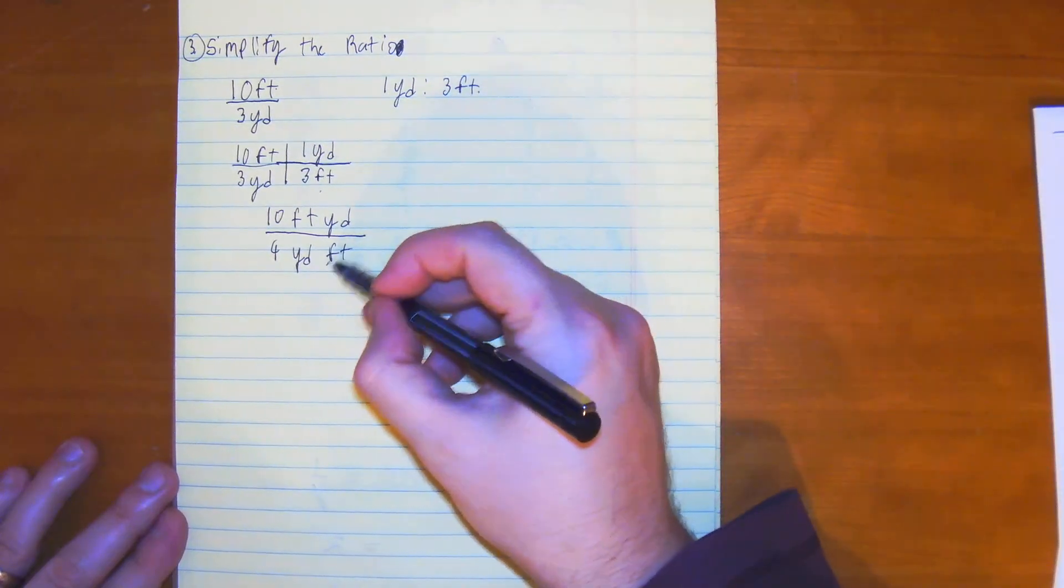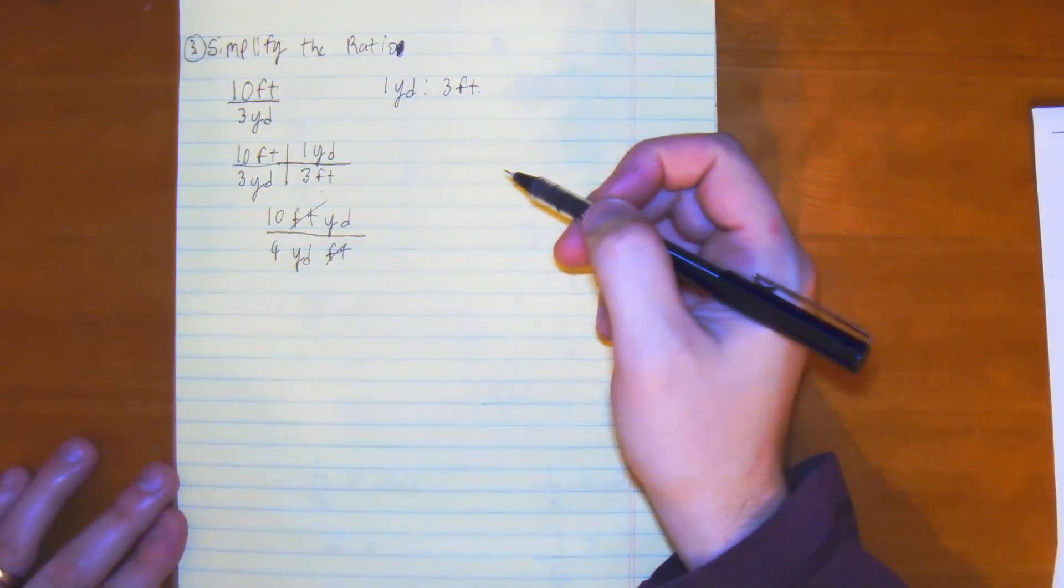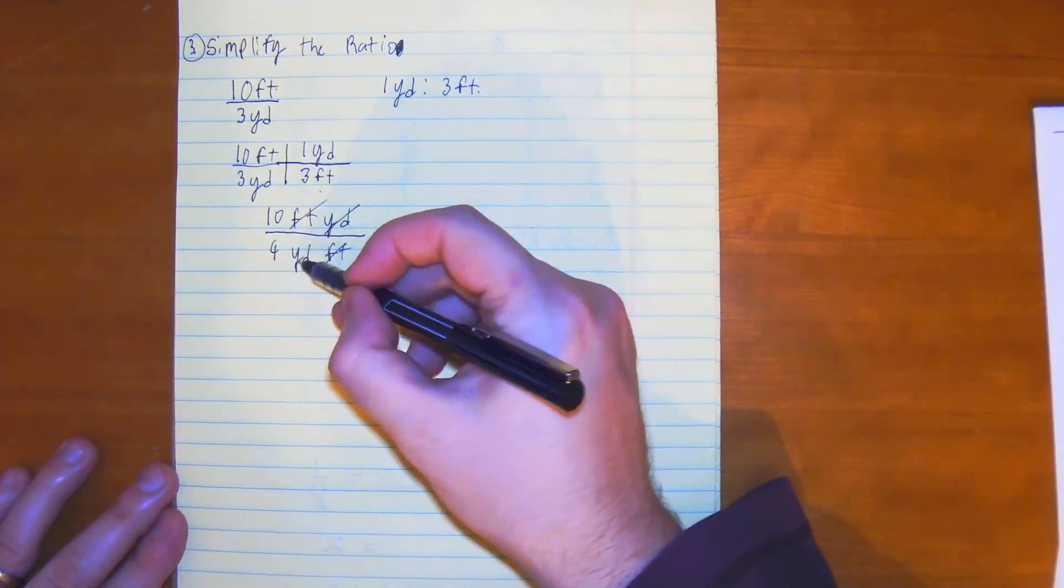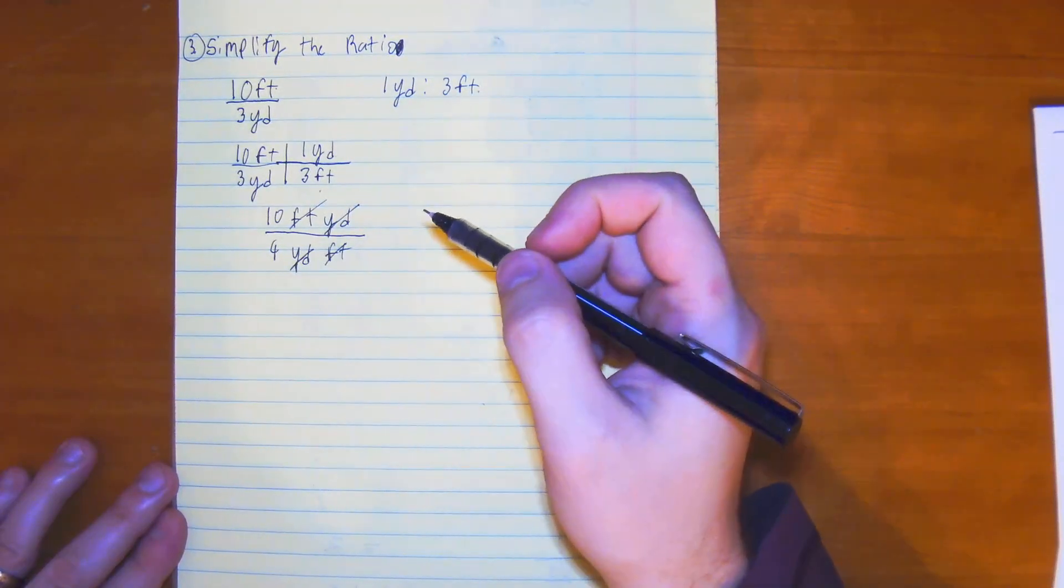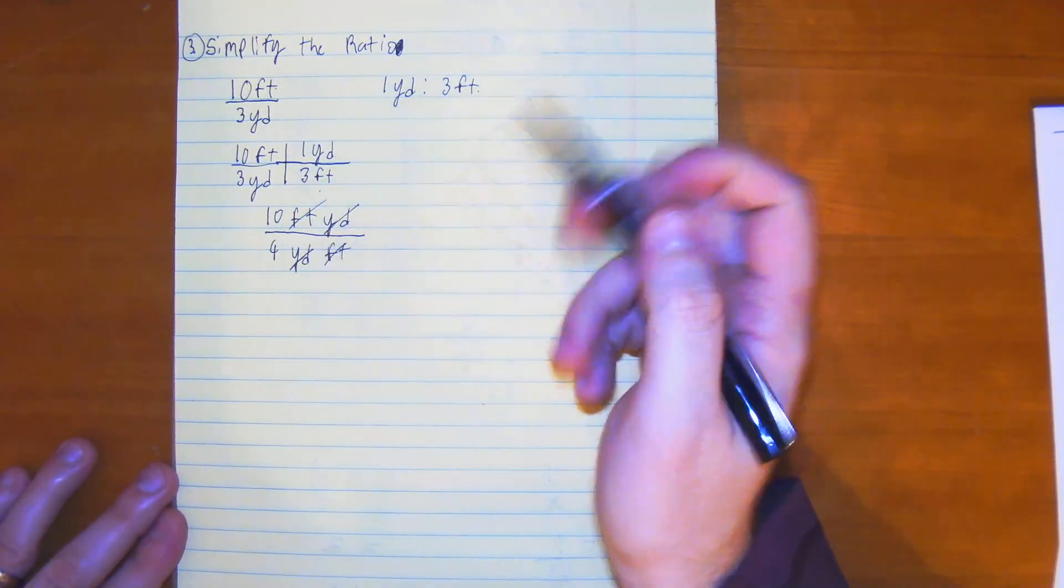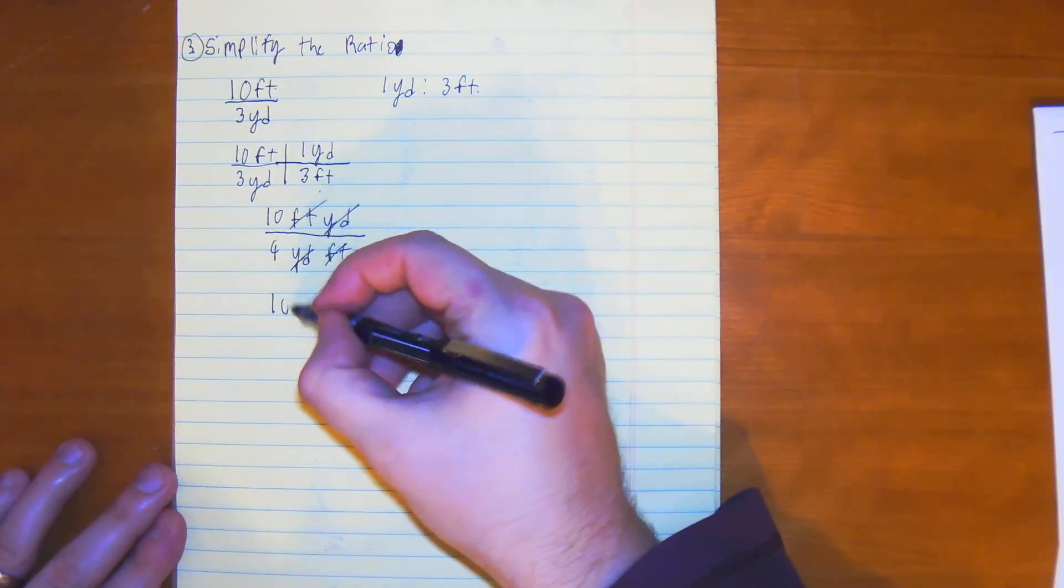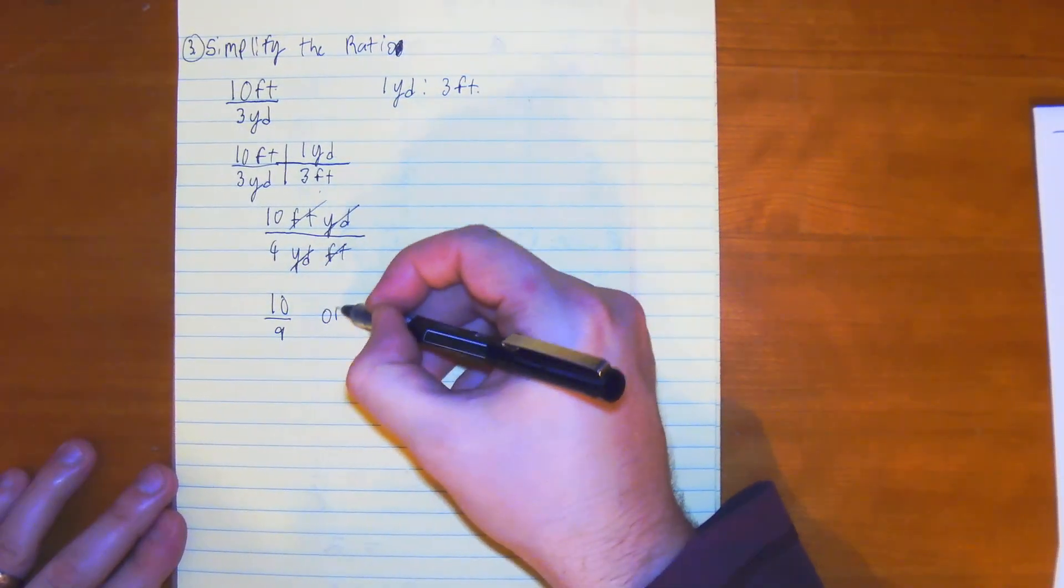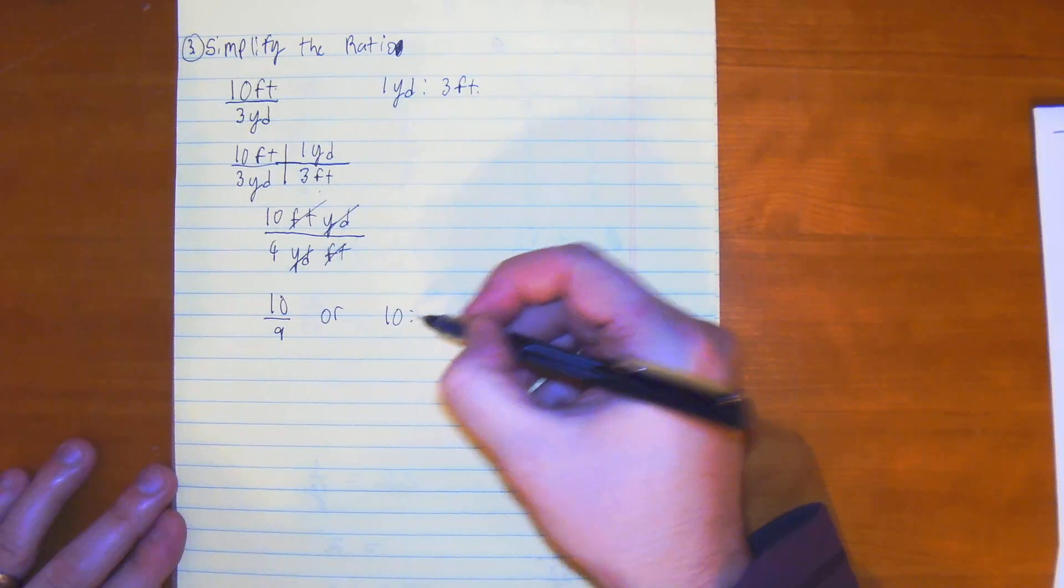As you can see, the foot will cancel with the foot. And the yards will cancel with the yards. So, we're left off with 10 over 9. So, that means our ratio would be 10 over 9 or 10 to 9.